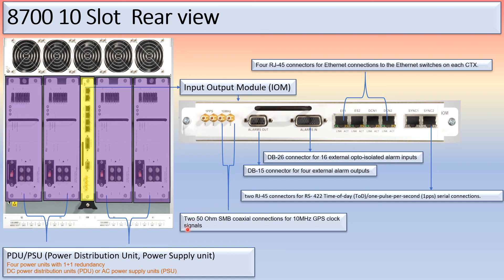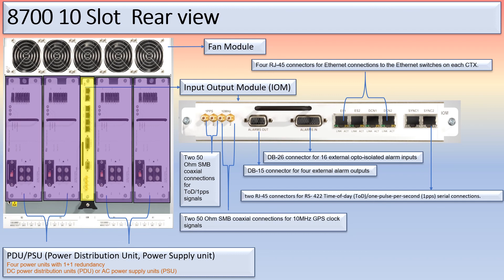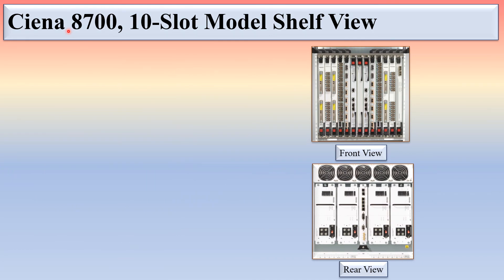The two 10 MHz ports use 50-ohm SMB coaxial connections for GPS clock signals. The two 1PPS ports use SMB coaxial connections for TOD (time of day) and one-pulse-per-second signals. This is the fan module. You can see the front and rear view together for the 8700 10-slot model.